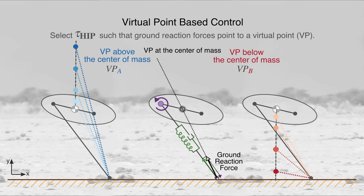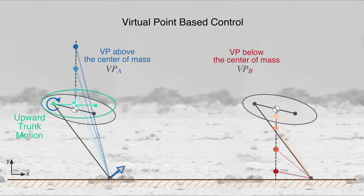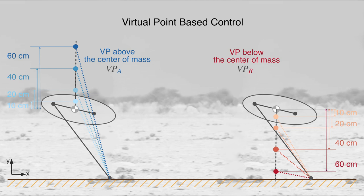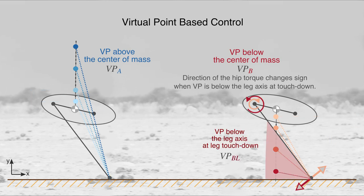There are two axes important in our framework. First is the center of mass to foot axis, which divides the parameter space into two: virtual points above the center of mass induce upward trunk motion during the stance phase, whereas points below induce downward trunk motion. The magnitude of the trunk oscillation increases as the virtual point moves further from the center of mass. The second important axis is the hip to foot axis, which determines the sign of the hip torque.